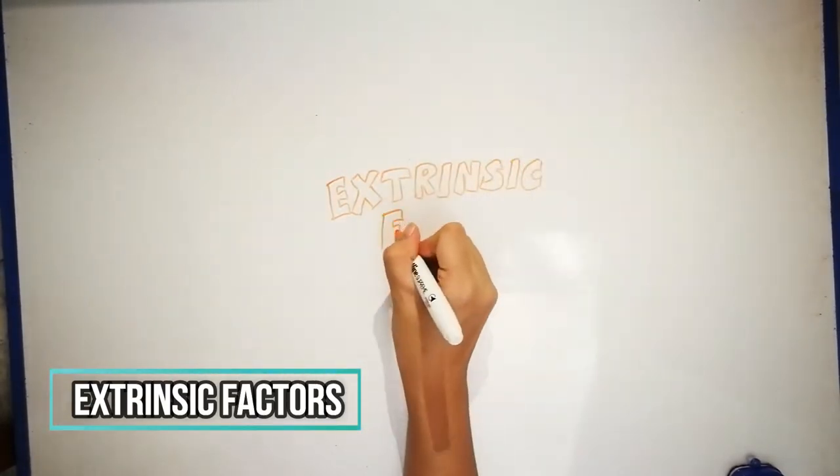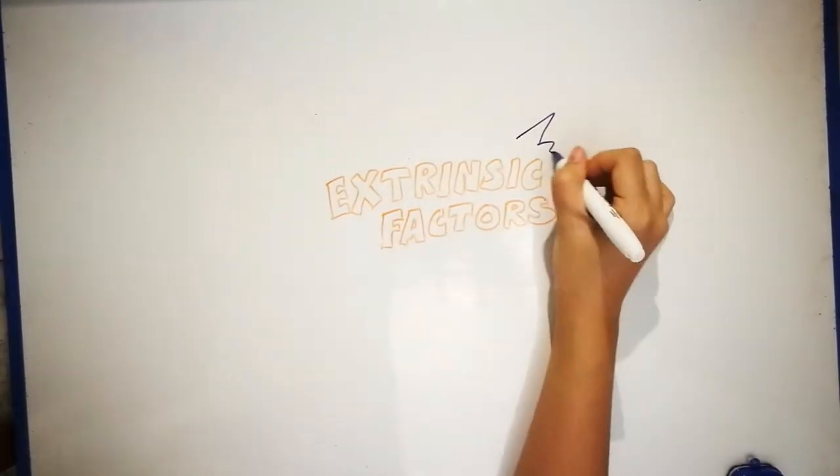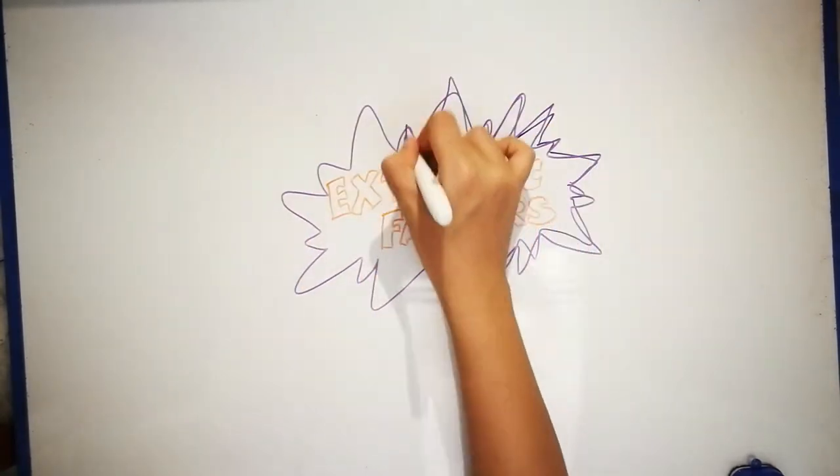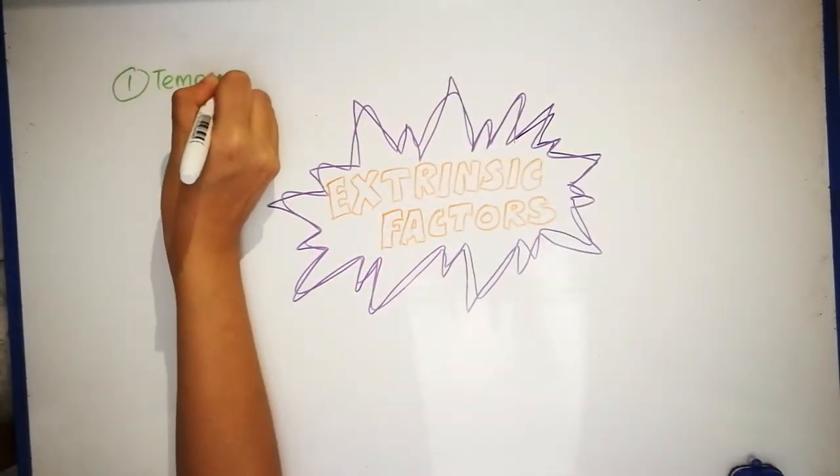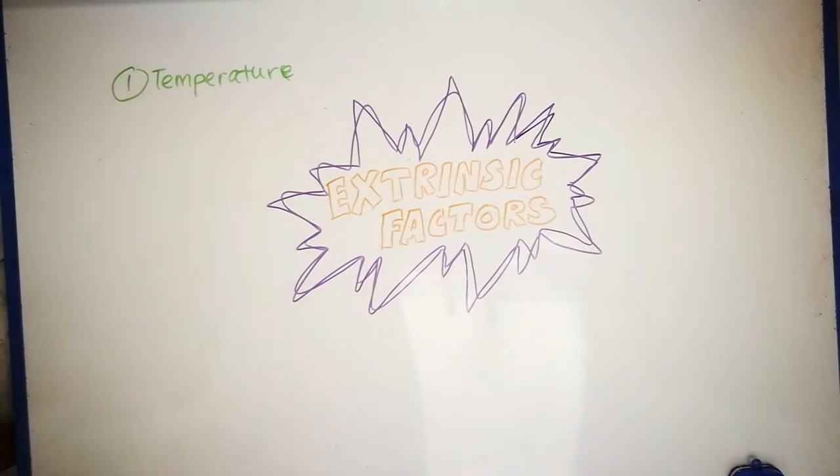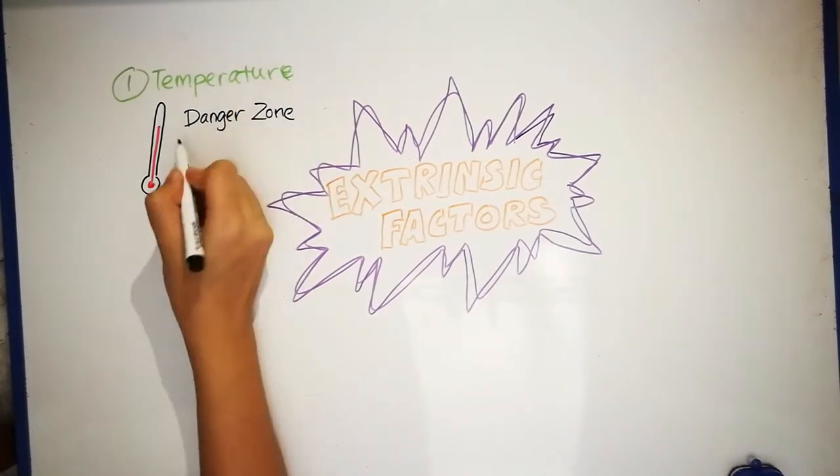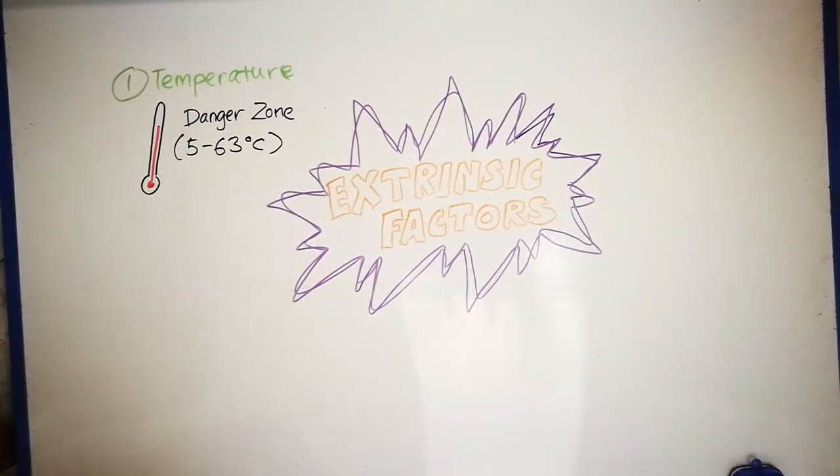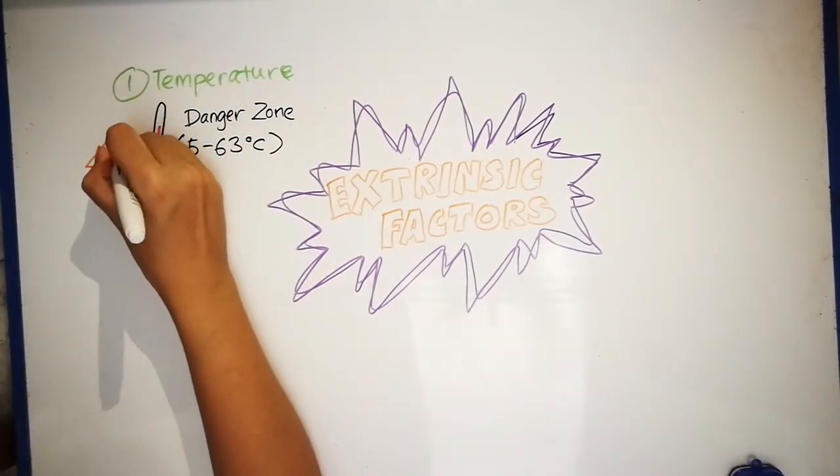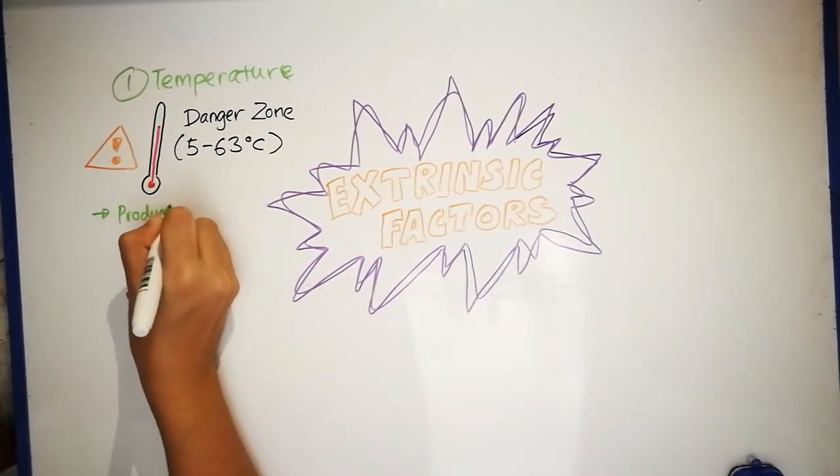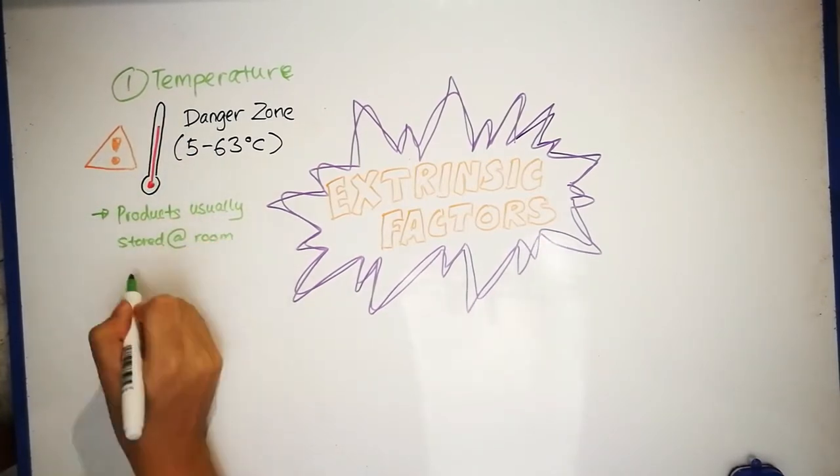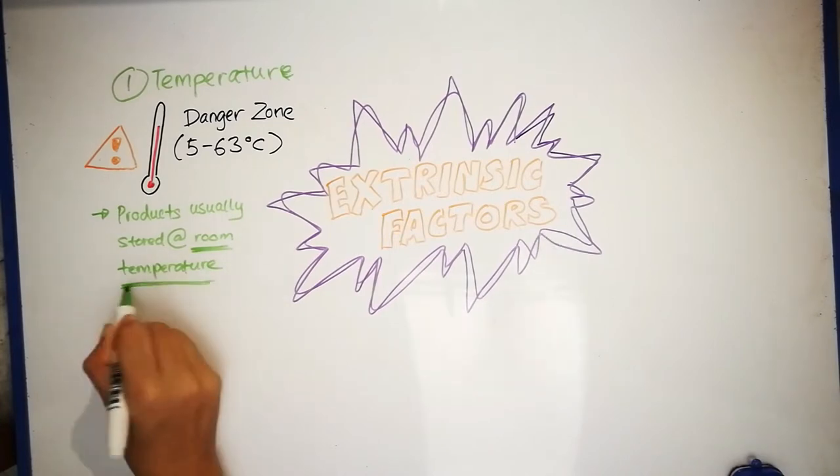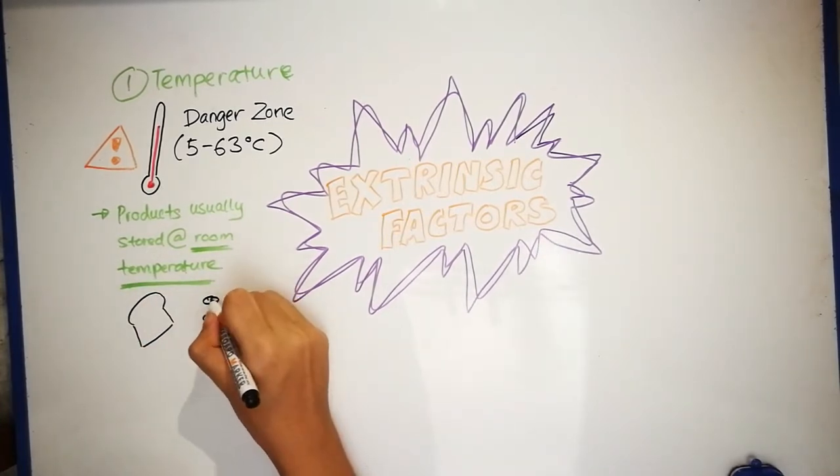Now, let us start with extrinsic factors. Temperature is one of the extrinsic factors. The danger zone for most of the microbes to grow is from 5 to 63 degrees Celsius. As bakery products are usually stored in room temperature, microbes can grow actively and cause food spoilage.